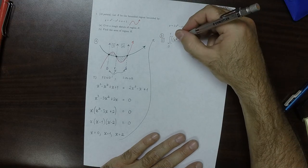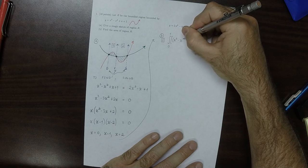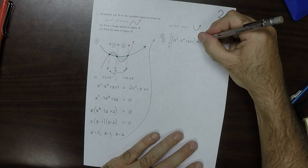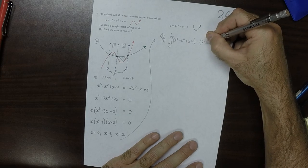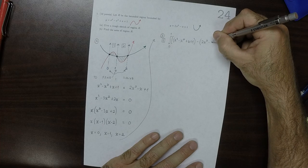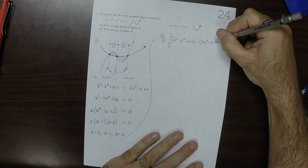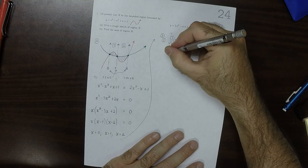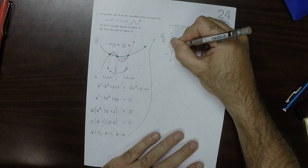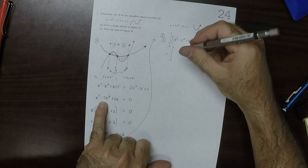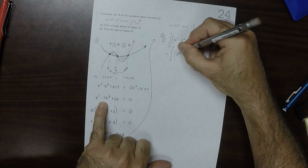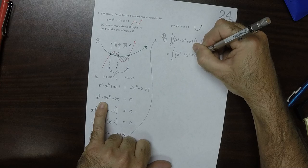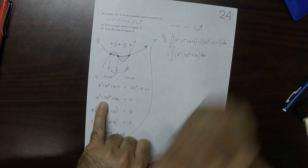So sub-region 1 will be x cubed minus x squared plus x plus 1, so the red minus the green, minus 2x squared minus x plus 1 dx. Simplifying, that'll be the integral from 0 to 1 of x cubed minus 3x squared plus 2x dx.